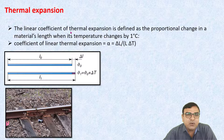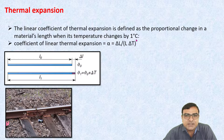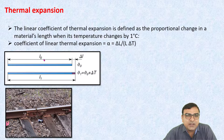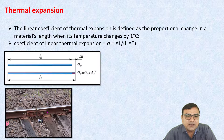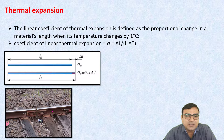Thermal expansion: the linear coefficient of thermal expansion is defined as the proportional change in a material's length when its temperature changes by 1 degree. The coefficient of linear thermal expansion: α = ΔL / (L × ΔT). For example, a rod of initial length L₀, when heated, increases in length by ΔL. In railways, you have seen that there is a gap between two rails because when the atmospheric temperature increases, the length of the rail also increases. That gap is maintained to avoid the chances of accident.